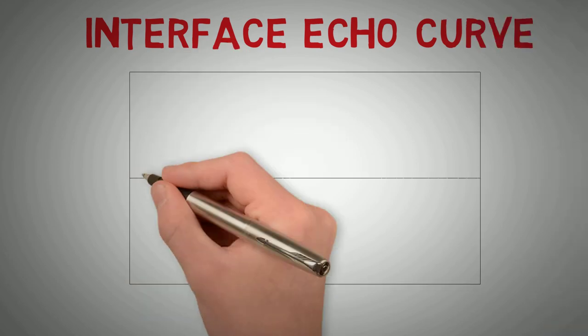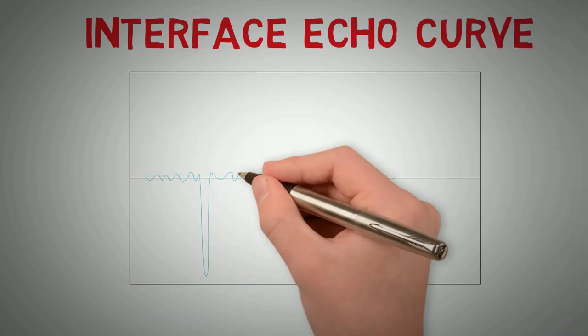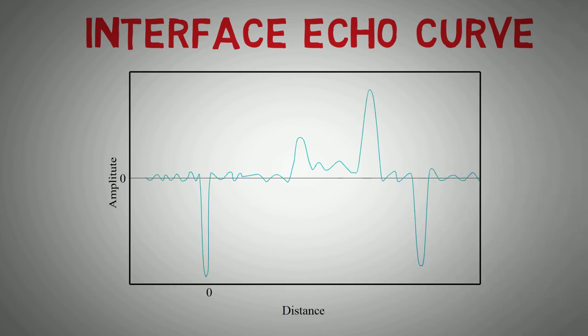Let us now look at the echo curve for an interface level, as our earlier example of oil and water in a vessel. Here we can see the reflection as the electromagnetic waves traveling down the probe encounter the surface level of the lighter oil. The remaining waves travel through the oil level and are reflected from the water and oil interface. We can see a larger amplitude reflection in the echo curve as a result of its denser properties.